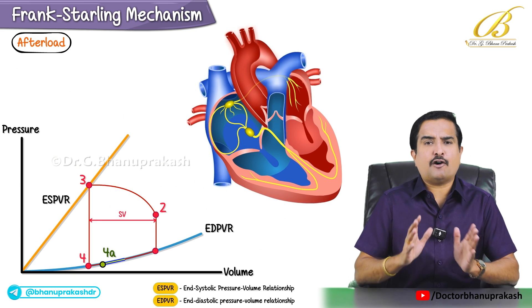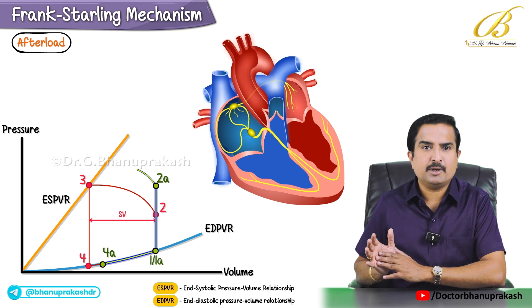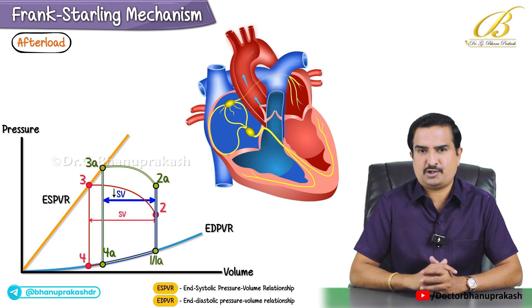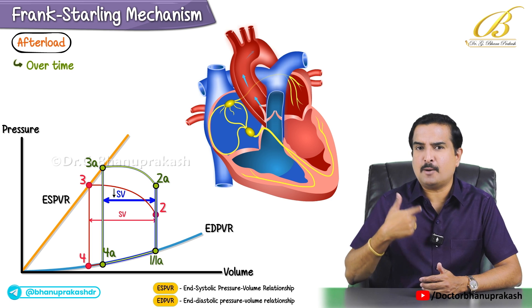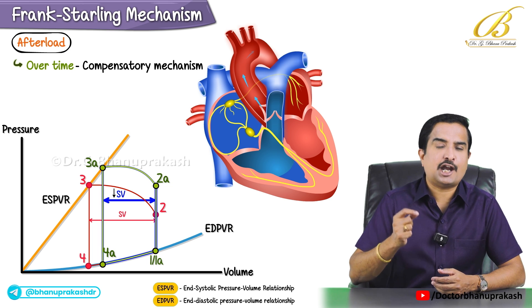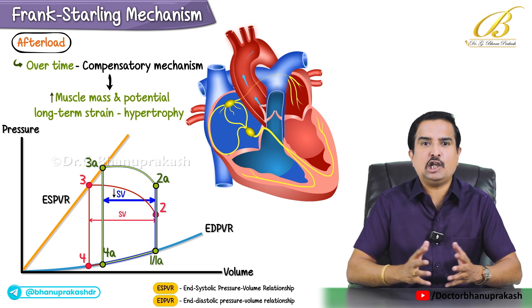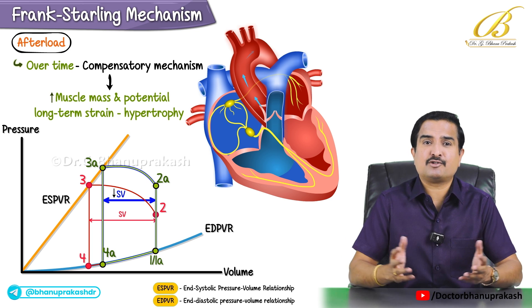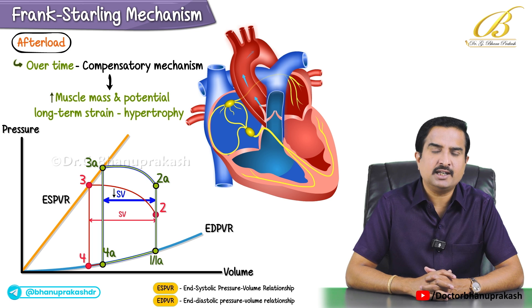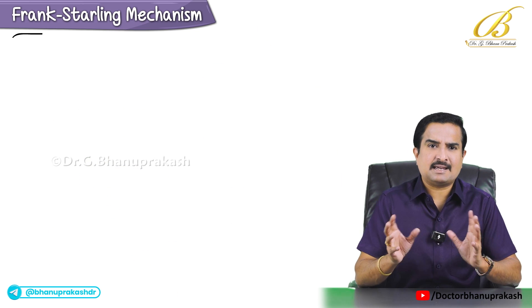Acutely, if afterload increases, the heart's stroke volume tends to decrease because it's harder to push blood out against higher pressure. Over time, compensatory mechanisms allow the heart to adapt, but this comes at the cost of increased muscle mass and potential long-term strain in terms of hypertrophy.